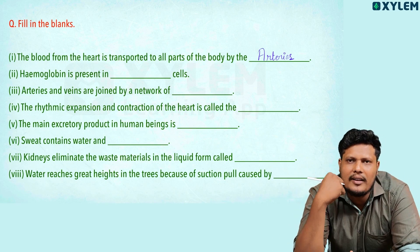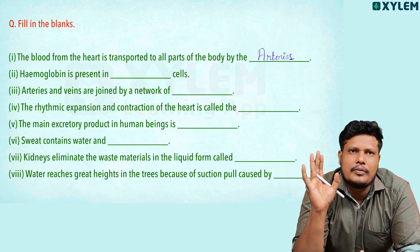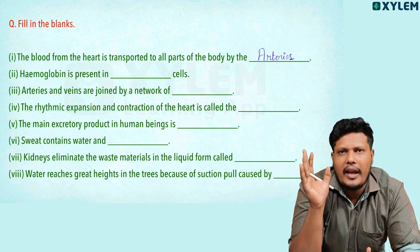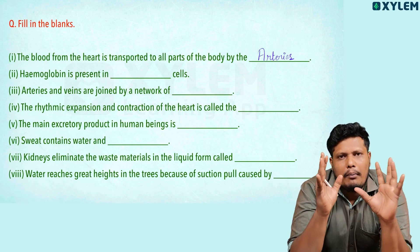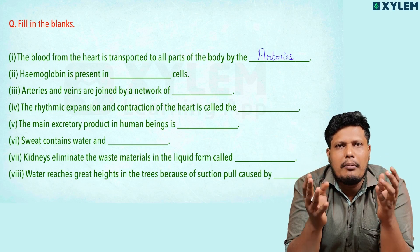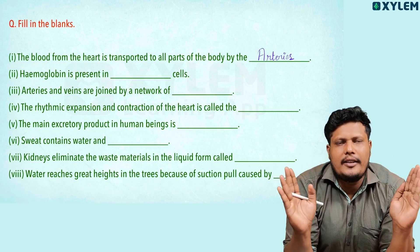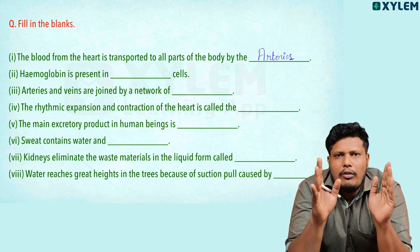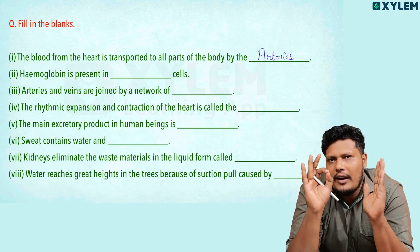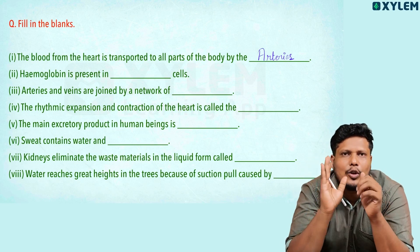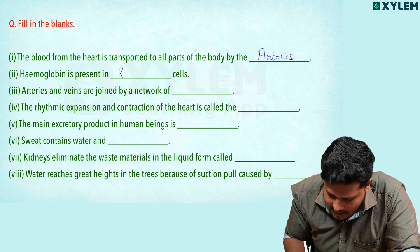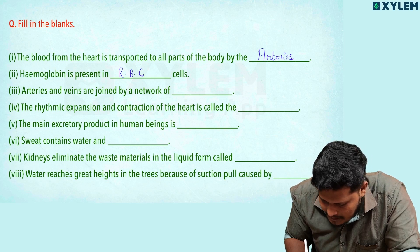Arteries carry blood from the heart to body parts. Next: hemoglobin is present in which cell? We have three blood cells — RBC, WBC, and platelet. Hemoglobin is present in RBC. It is the pigment which gives red color to the blood. So the answer will be red blood cell, or RBC, also called erythrocytes.